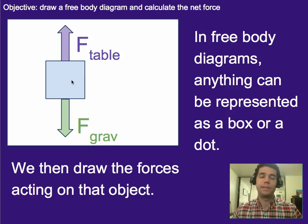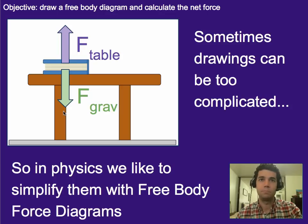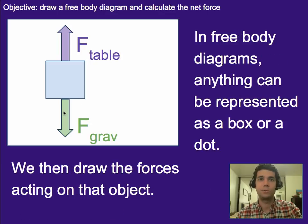And so once we have this box or dot drawn, we then draw the forces going away from it. It is usually the convention rather than going towards it. But we draw the forces going away from it and we draw all of the forces that are on it. So in this case, with the book, there was the force due to gravity and then there was the force from the table. We can draw both of those right here.